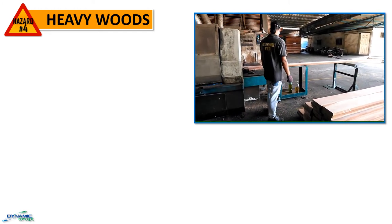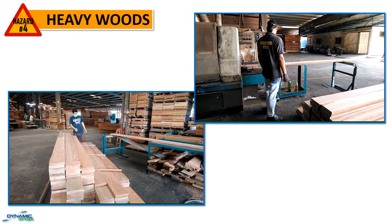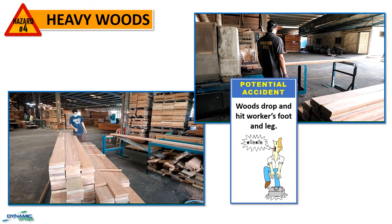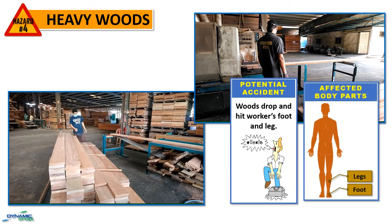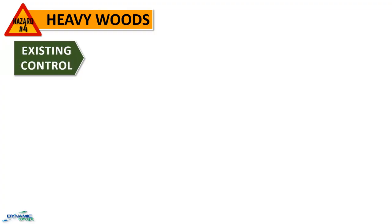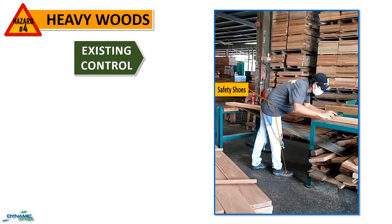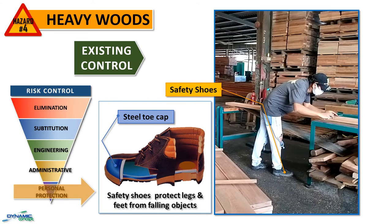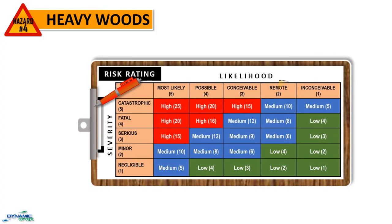When handling long and heavy wood, there is a chance the wood will drop, leading to injuries such as broken legs and toes. The weight of one piece of long wood is approximately 30 kilograms, so the severity of injury without personal protection is serious. However, workers wear safety shoes equipped with a steel toe cap, which helps reduce the impact of falling objects on workers' legs. Therefore, the severity of injury should the wood fall is low, and the risk rating for this hazard is classified as low — 2.